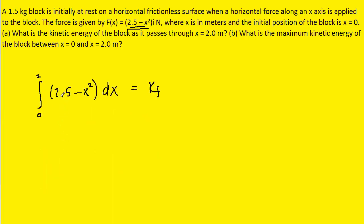And so for this constant, 2.5, if we integrate that with respect to x, we get 2.5x. And then for the variable, what we have to do is add 1 to the exponent so that it becomes x to the power of 3, and then divide by that new exponent, which is 3. And then we're going to evaluate that integral from 0 to 2 meters. This is going to equal our final kinetic energy.